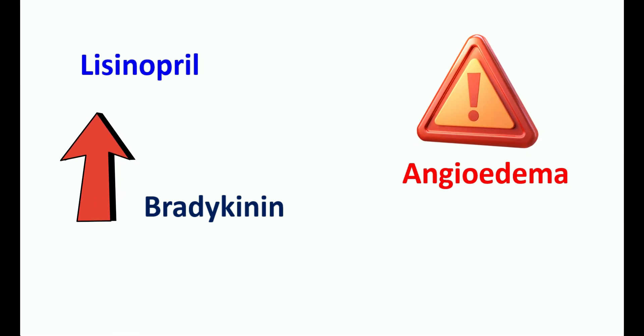Angioedema is a common adverse effect of ACE inhibitors including lisinopril. This medication can produce angioedema — the swelling of tissues under the skin due to increased capillary permeability and vasodilation. Since lisinopril is a vasodilator, it can increase tissue leakage leading to angioedema. This action is connected with the mediator bradykinin; lisinopril can increase bradykinin levels, which increases capillary permeability leading to swelling and angioedema.